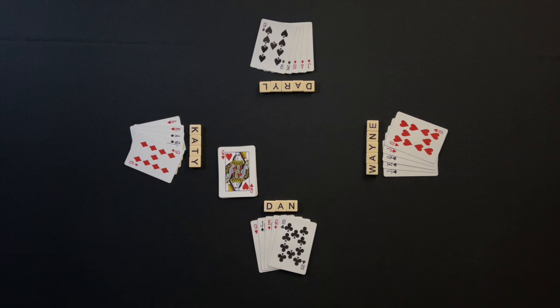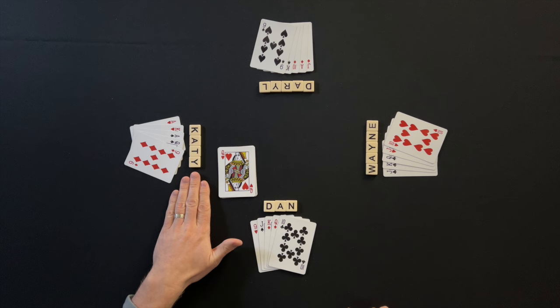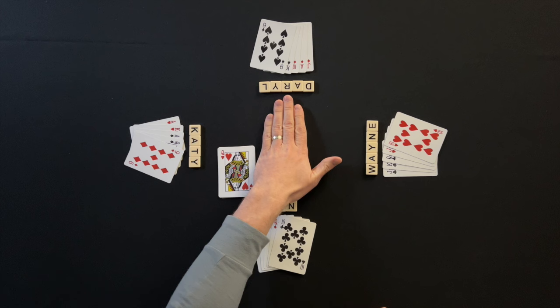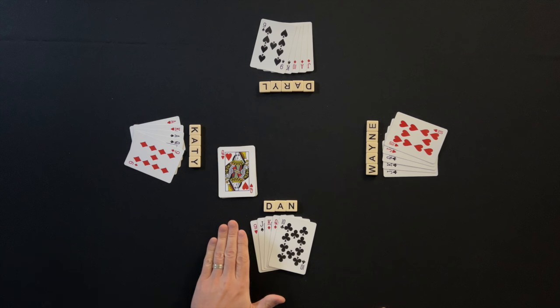Dan has dealt, which gives Katie the option to call hearts as Trump first. Katie chooses to pass. The option moves left to Daryl. Daryl also chooses to pass. The option moves to Wayne who decides to pass. The option moves to the dealer, Dan. Dan decides to pass and turns the flipped up card down.